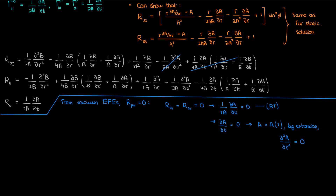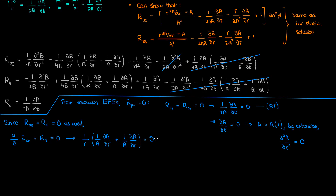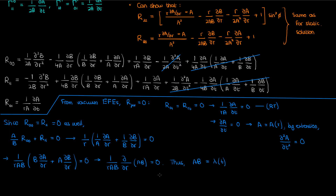Applying this fact to R₀₀ and R₁₁ causes a whole bunch of terms to cancel. Since both must equal zero by the vacuum Einstein field equations, we can form the combination (A/B)·R₀₀ + R₁₁ = 0. Evaluating the left-hand side and simplifying, we find that the terms in parentheses represent the product rule applied to ∂(AB)/∂R. The solution is simply A·B = λ, a constant with respect to R — though it can still be a function of t. Isolating B in terms of A and taking the partial with respect to R gives us a starred equation we'll use later.